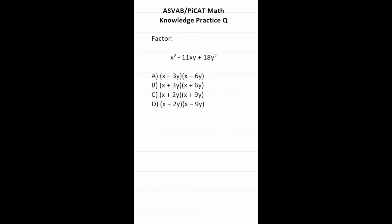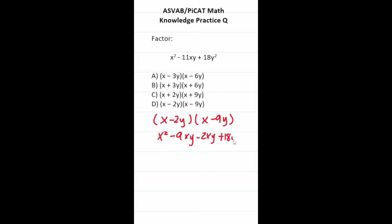This practice question says: factor x squared minus 11xy plus 18y squared. We have a quadratic with leading coefficient 1, so we need two terms that multiply to 18y squared and add to negative 11xy. That's negative 2y and negative 9y. Checking: x squared minus 9xy minus 2xy plus 18y squared simplifies to x squared minus 11xy plus 18y squared, confirming D is correct.